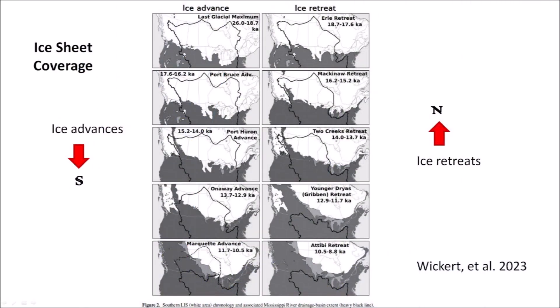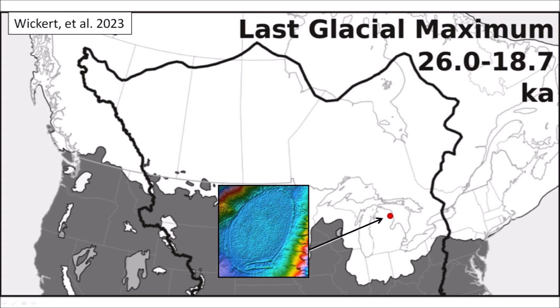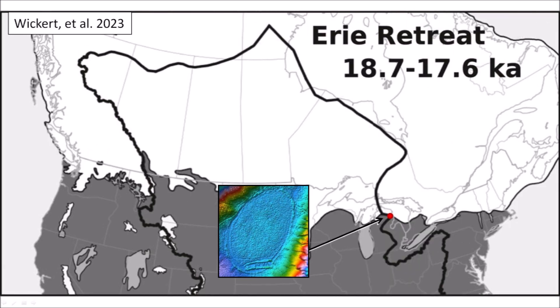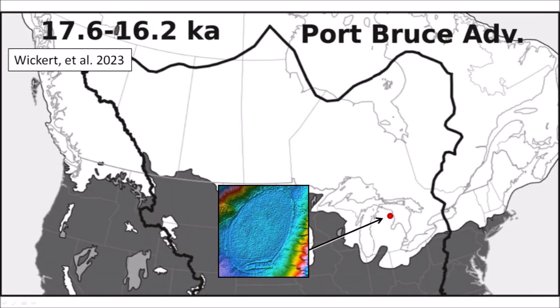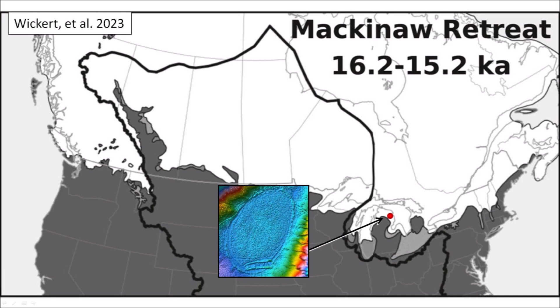A 2023 paper by Wickert et al. illustrates five cycles of southward advances and northern retreats of the Laurentide Ice Sheet. We can use these images to estimate when the basin in Michigan could have formed. The last glacial maximum from 26,000 years ago to 18,700 years ago covered all of Canada and the northern United States with a layer of ice that was almost three kilometers or two miles thick. Therefore, the basin in Michigan must have formed less than 18,700 years ago. The last glacial maximum was followed by the Erie retreat, which lasted until 17,600 years ago. At this time, the location of the basin was not covered by ice and the basin could have formed then. However, the Port Bruce Advance covered all of the Great Lakes in Michigan with ice again. If the basin had formed before, it would have been obliterated by the ice advance. During the Mackinac retreat, the northern part of the Michigan Peninsula still was covered with ice. The basin could not have formed then, so it must be younger than 15,200 years ago.